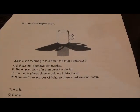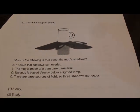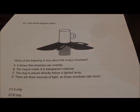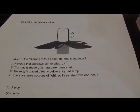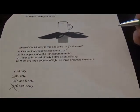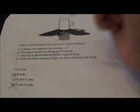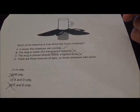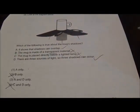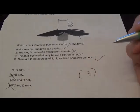Question 29: Look at the diagram — which of the following is true about the shadow? The shadows overlap each other — that's true, so cancel those without A. The mark is made of a transparent material — it won't have a dark shadow, so not true, cancel those with B. There are 3 light sources, so 3 shadows can occur — definitely 1, 2, 3. Answer for 29 is 3.